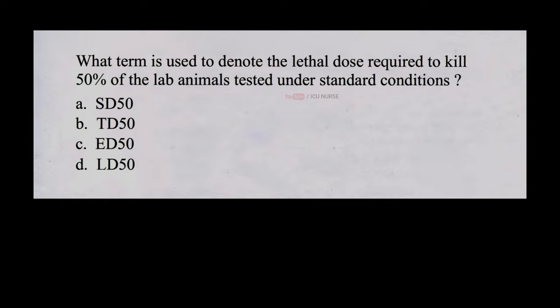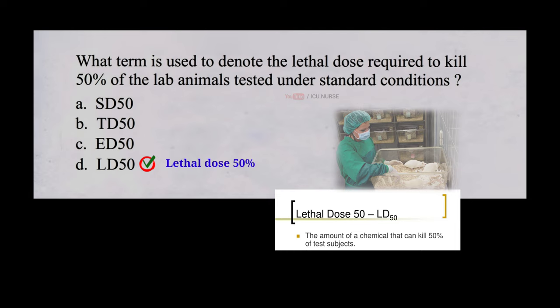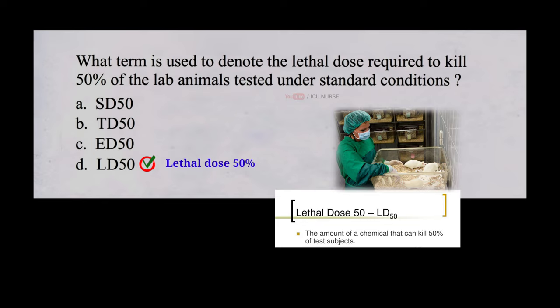What term is used to denote the lethal dose required to kill 50% of the lab animals tested under standard conditions? A. SD50, B. TD50, C. ED50, D. LD50. And the correct answer is D, LD50. LD50 stands for Lethal Dose 50%. It represents the dose of a substance that is lethal to 50% of the population under specific conditions.